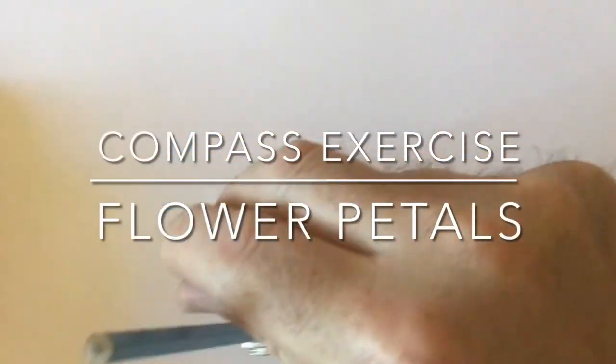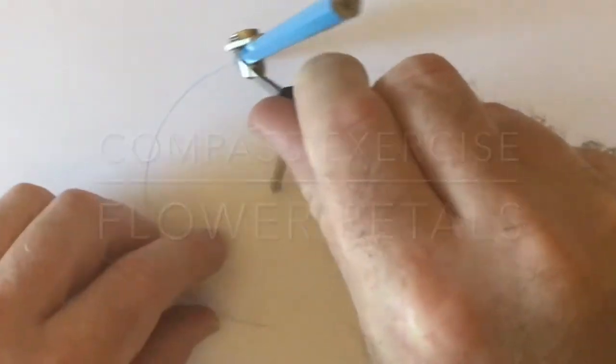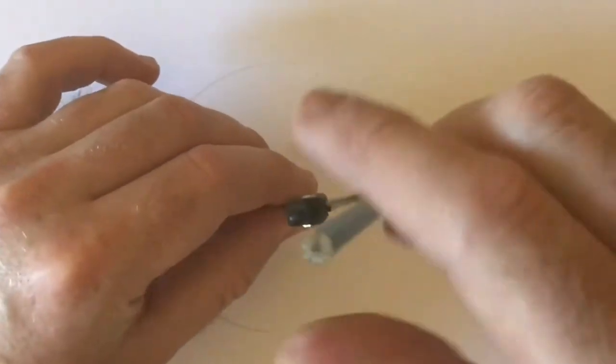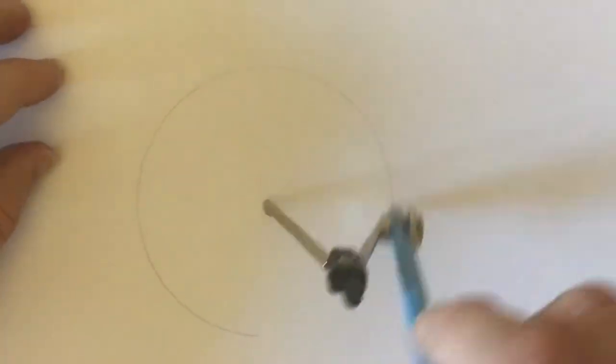This is an exercise designed to make you comfortable using a compass. So first, draw your circle at the set radius you are given. On this one it is around 50 millimeters.